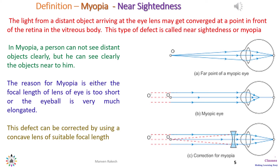A myopic person can see clearly the objects which are near to him. The reason for myopia is either the focal length of the eye lens is too short, or the eyeball is very much enlarged. This defect can be corrected by using a concave lens of suitable focal length, as shown in the bottom-most figure.